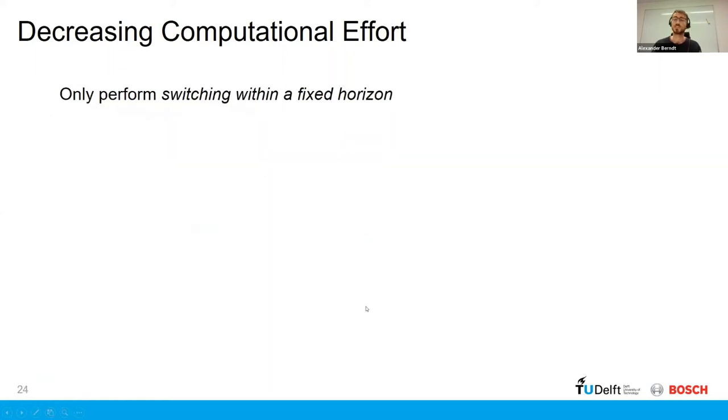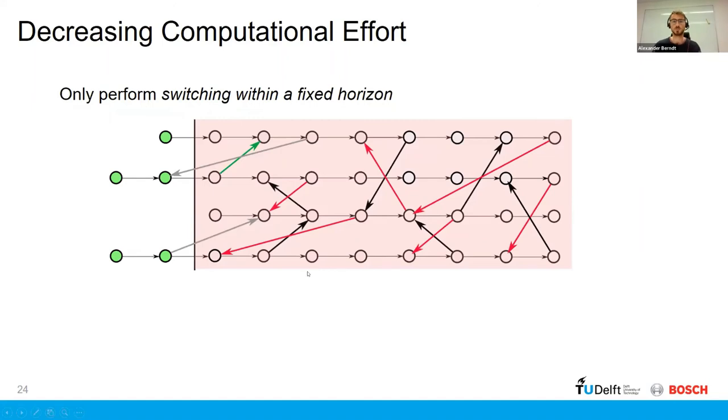So first, switching dependencies within a horizon. So we have initially, in the first formulation, we would look at the entire action dependency graph and switch all the possible inter AGV dependencies. But now, instead, we only look at the switchable dependencies within a given time horizon. And we leave the original dependency as it was in the future. So this greatly reduces the number of binary variables.